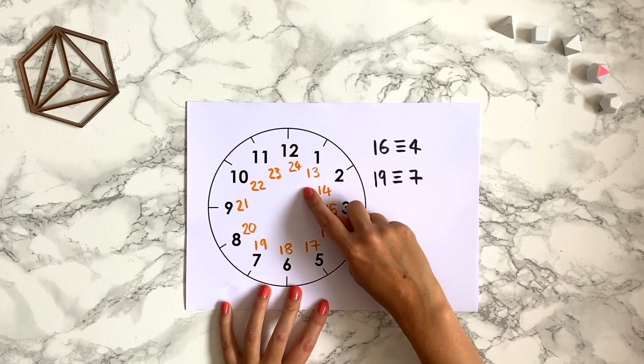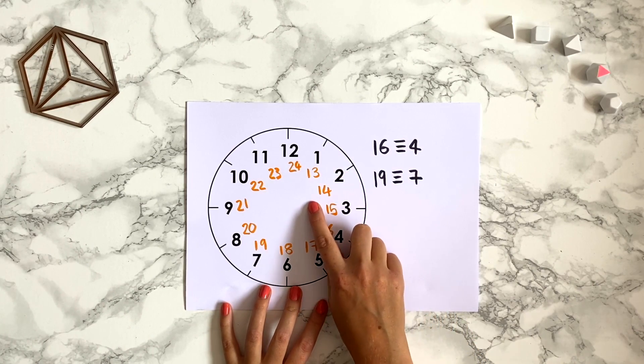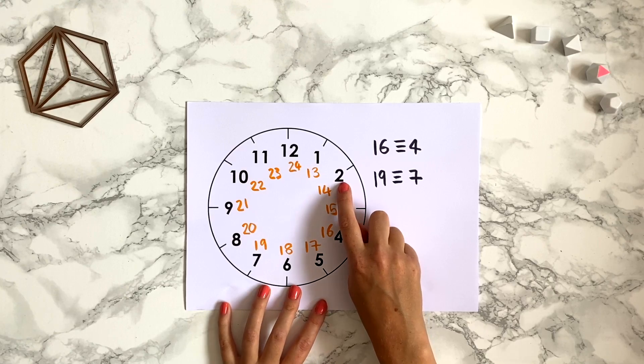so 25 would be next to the 1 and 26 would be next to the 2. So 26 is congruent to 2.